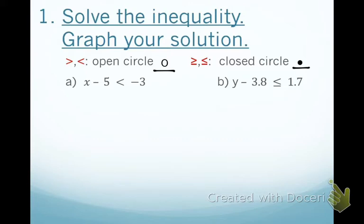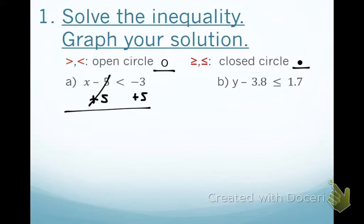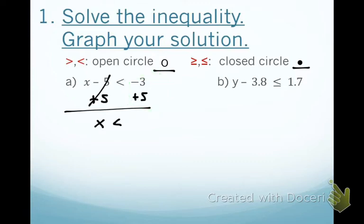For this first example, we're going to solve the inequality and then graph the solution. This is done almost identical to the way we did equations. Identify the variable: X. What is not allowing X to be alone? Subtract by 5. What's the opposite of subtract by 5? Add by 5. What you do to one side, you do to the other — subtract by 5 on both sides. Negative 5 and positive 5 are opposites, so they cancel each other out. Drop down the X. The symbol says less than, so we drop down the less than sign. Different signs — subtract and take the sign of the larger number. Negative 3 plus 5 is positive 2. Box that in because that's our answer.